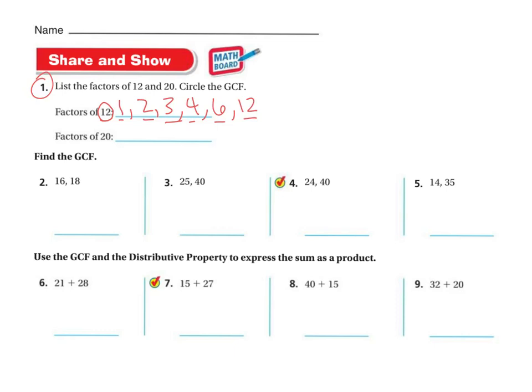So looking at the factors of 20, I'm going to get 1, 2, 4, 5, 10, and 20. As I'm looking, they both have 1 in common, they both have 2 in common, they both have 4 in common, and that's it. So the greatest common factor on this one is going to be 4.